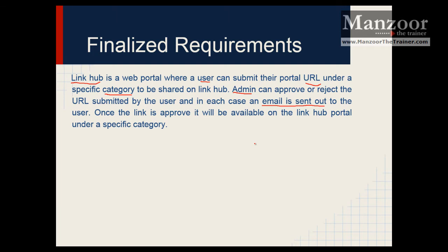So this is our finalized requirement. Now what we need to do is identify the roles first — that means who is going to access my portal. Basically there are three kinds of users: one is a normal guest who without logging in can access the common page of URLs. The next major roles are admin and user. If a user wants to submit a URL they need to login, register as a user, and submit the URL. Admin will login and approve or reject that particular URL. So basically we have two major roles: user and admin.